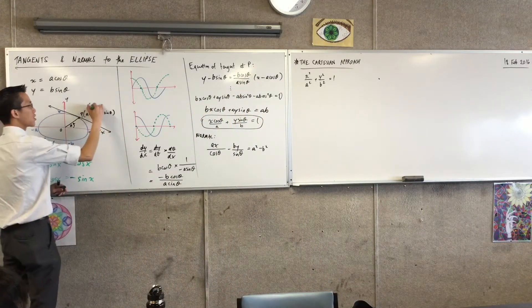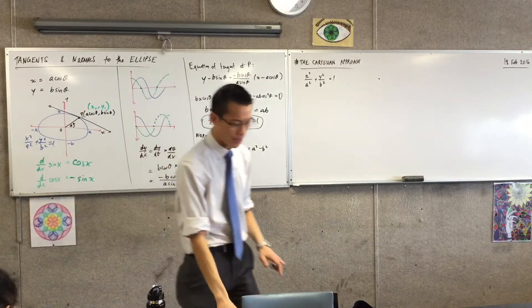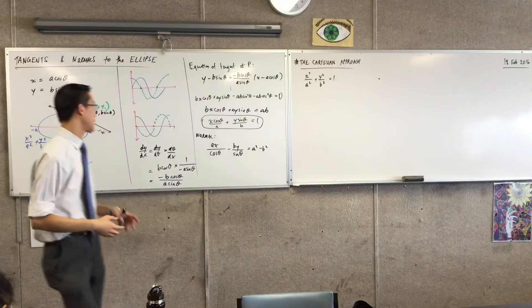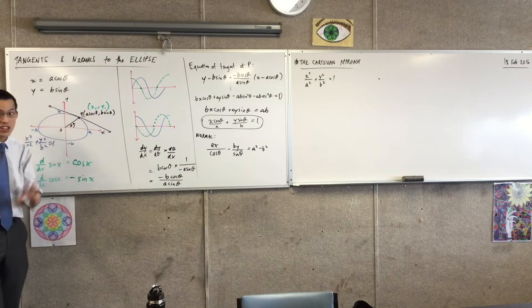So I'm just going to call this guy x1, y1. That's the point I'm interested in. And I want to find the equation of the tangent there. Again, I've got the point, I just need the gradient.